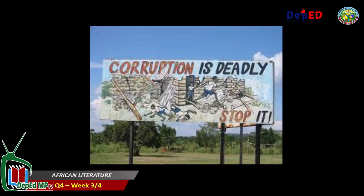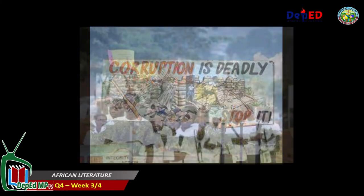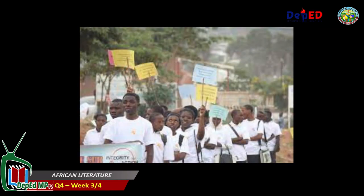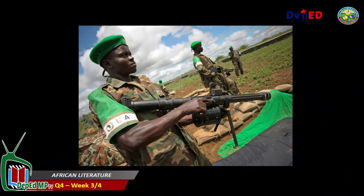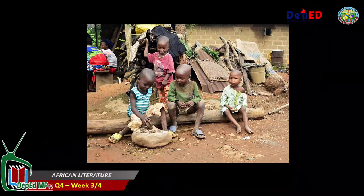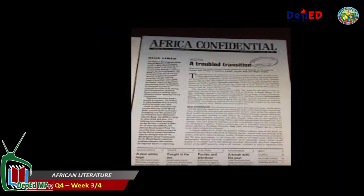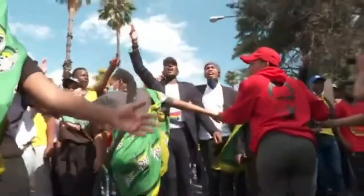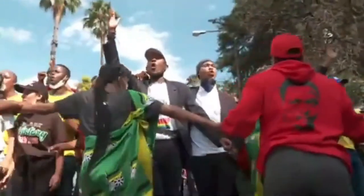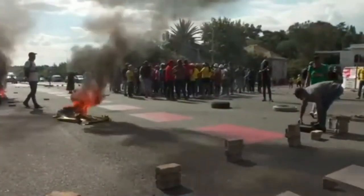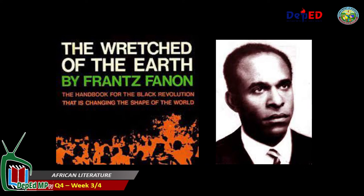Political issues rose in many African countries during the post-independence period. New governments were involved in large-scale corruption, bribery, militarism, and treason, and appeared to be as oppressive as the colonial white rulers who came before them. This eventually became the subject of writings for post-independence authors. Even up to these days, some countries in Africa still suffer from unstable political situations which lead to protests, coup d'état, and violence. The Wretched of the Earth, written by Frantz Fanon in 1961, is an example of literature that tackles political issues of post-independence Africa.